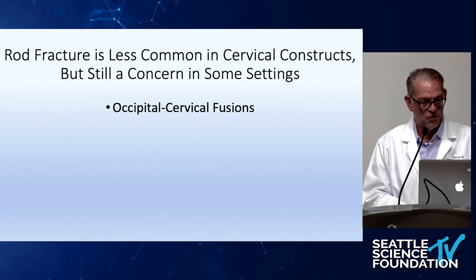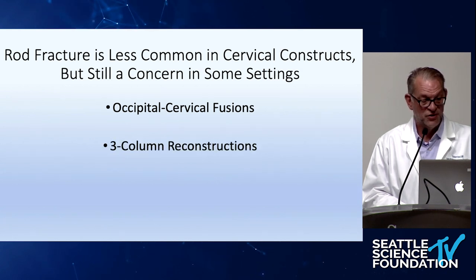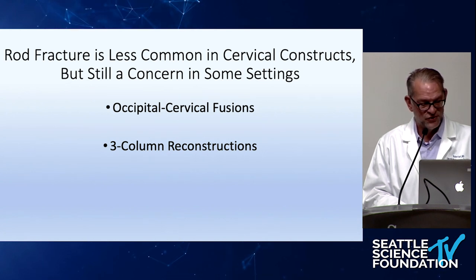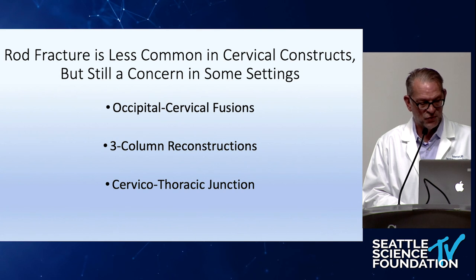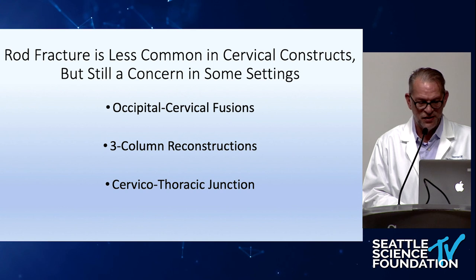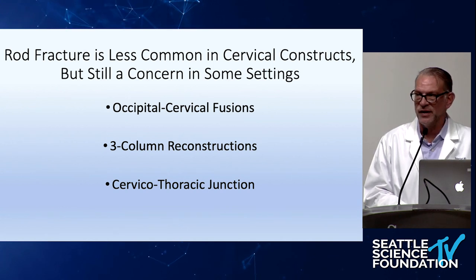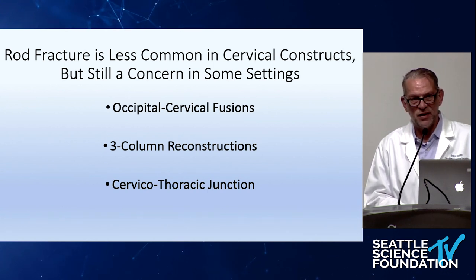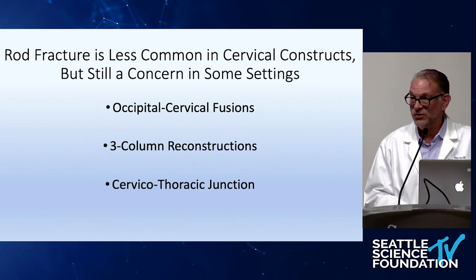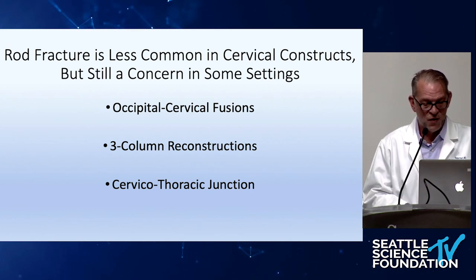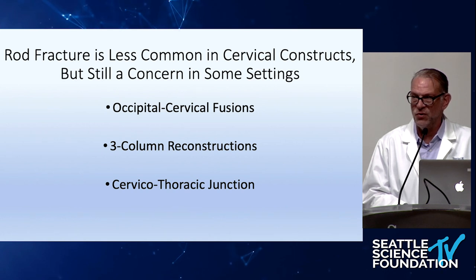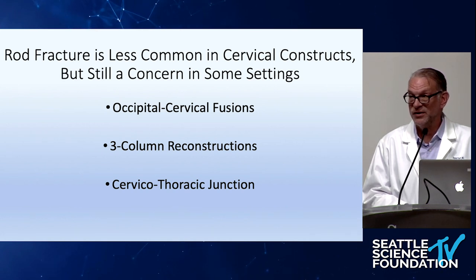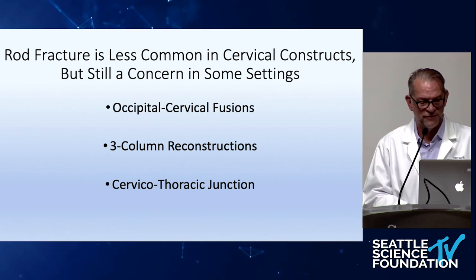Occipital cervical fusions are one region. Patients who have undergone three-column reconstructions with a front and back procedure are somewhat higher risk. The cervical-thoracic junction is the third area that I think provides some risk, and I've seen non-unions in all three of these clinical contexts. This is a topic ISSG has attempted to look into, but there are almost no rod fractures in our current database, and we're really unable to make any strong conclusions about risk factors or clinical effects.